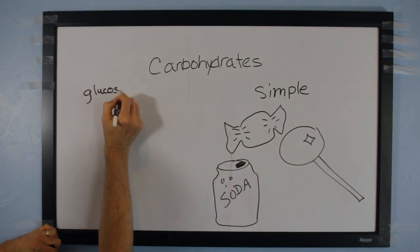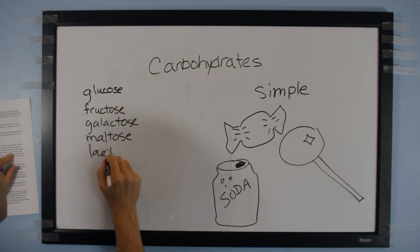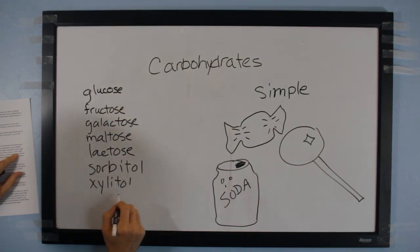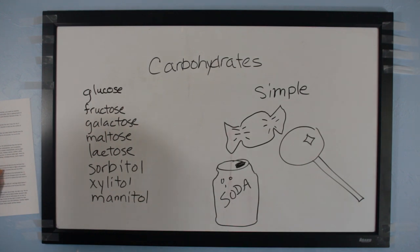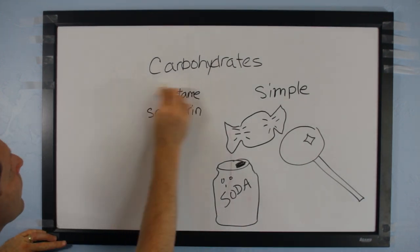There are over a dozen types of sugar: glucose, fructose, galactose, maltose, lactose, sorbitol, xylitol, mannitol, sucralose, aspartame, saccharin, and many others.